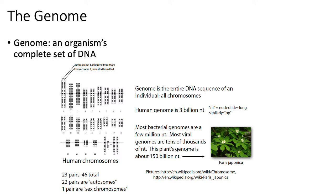It wouldn't make sense to teach a class on genomics without defining what the genome is. The genome in the context of this class is basically the complete set of DNA of an organism. For humans, excluding the mitochondrial genome, we have 23 pairs of chromosomes — 22 autosomes and one pair of sex chromosomes. The human genome is approximately 3 billion nucleotides in length.